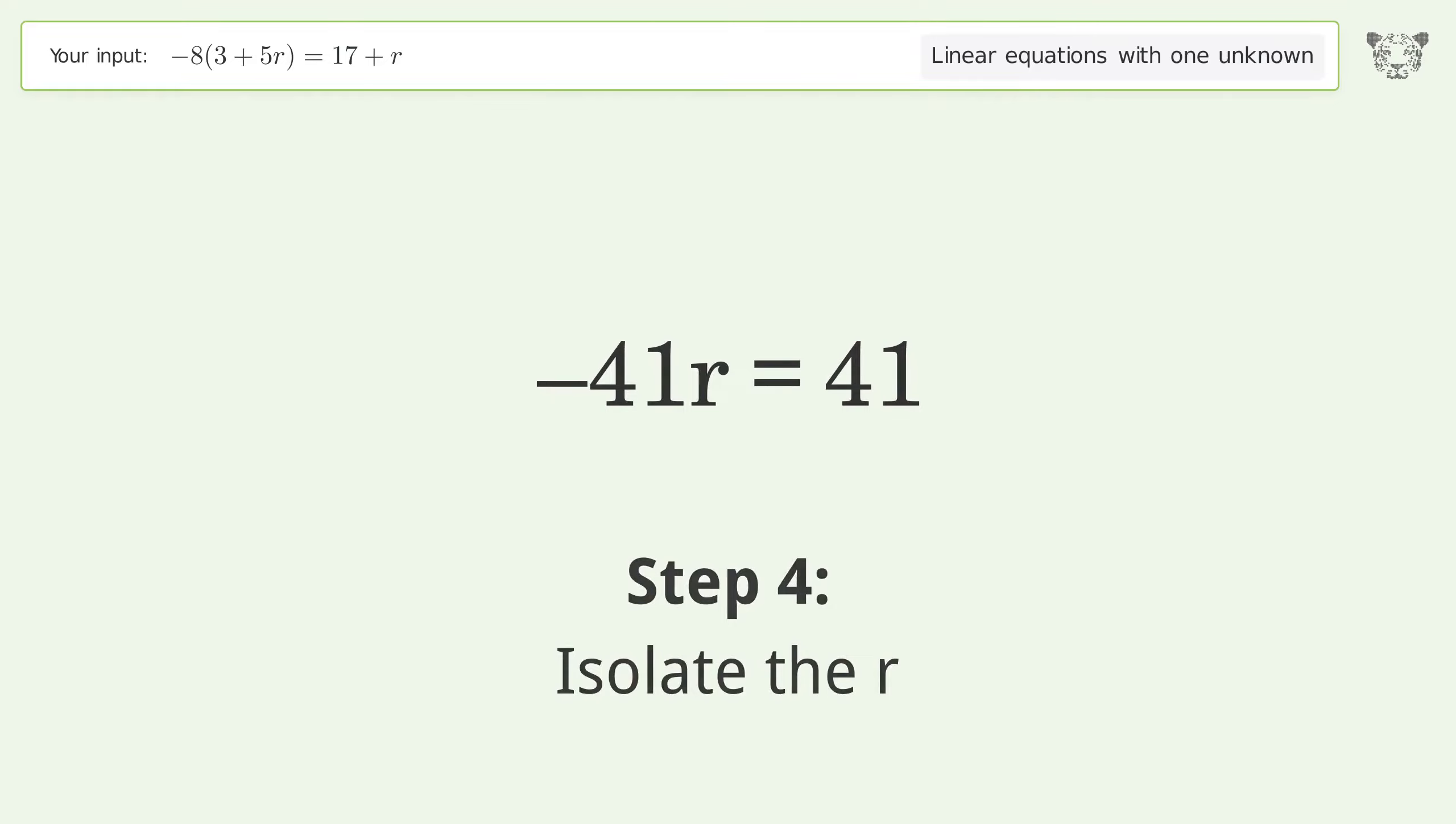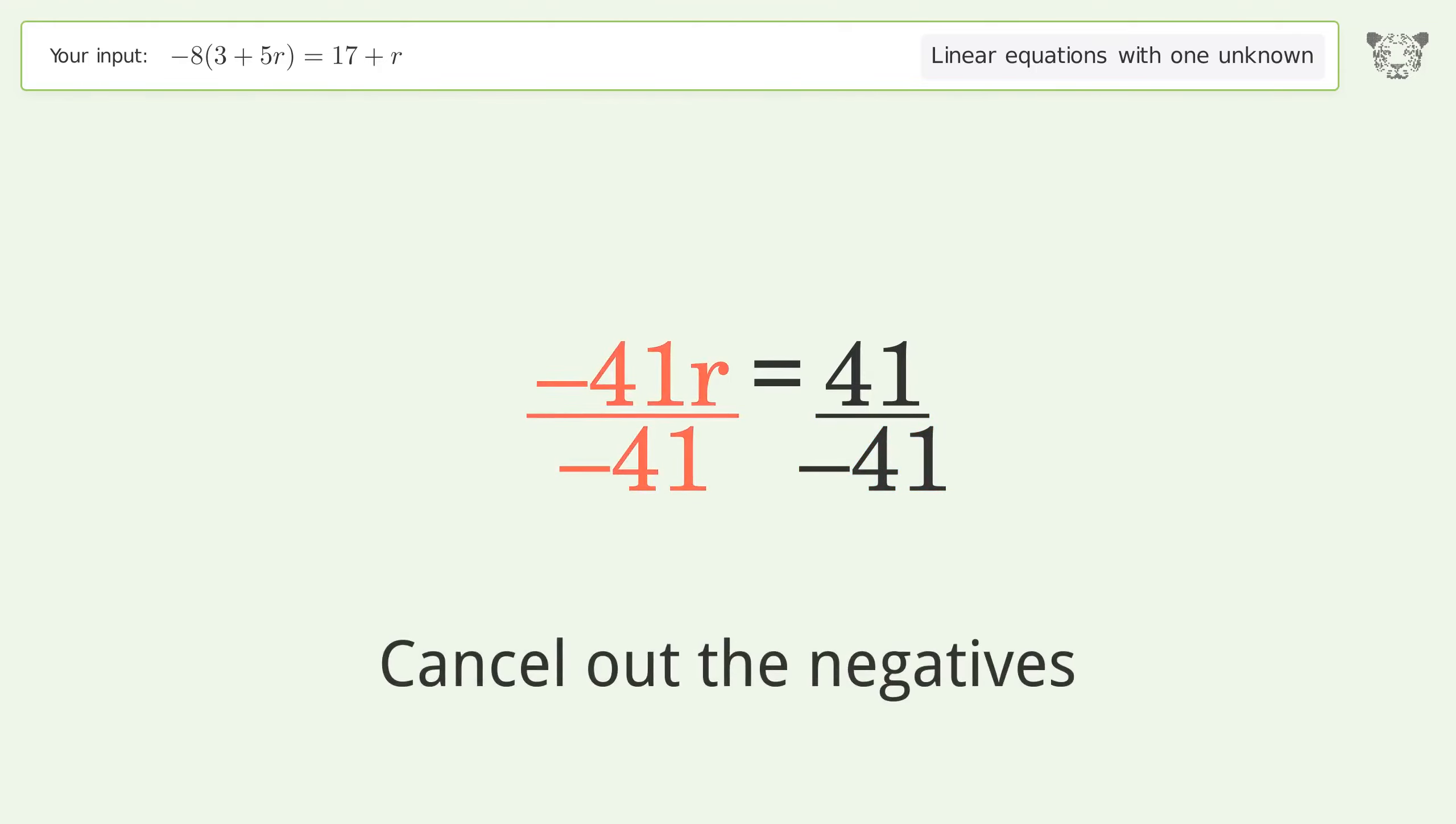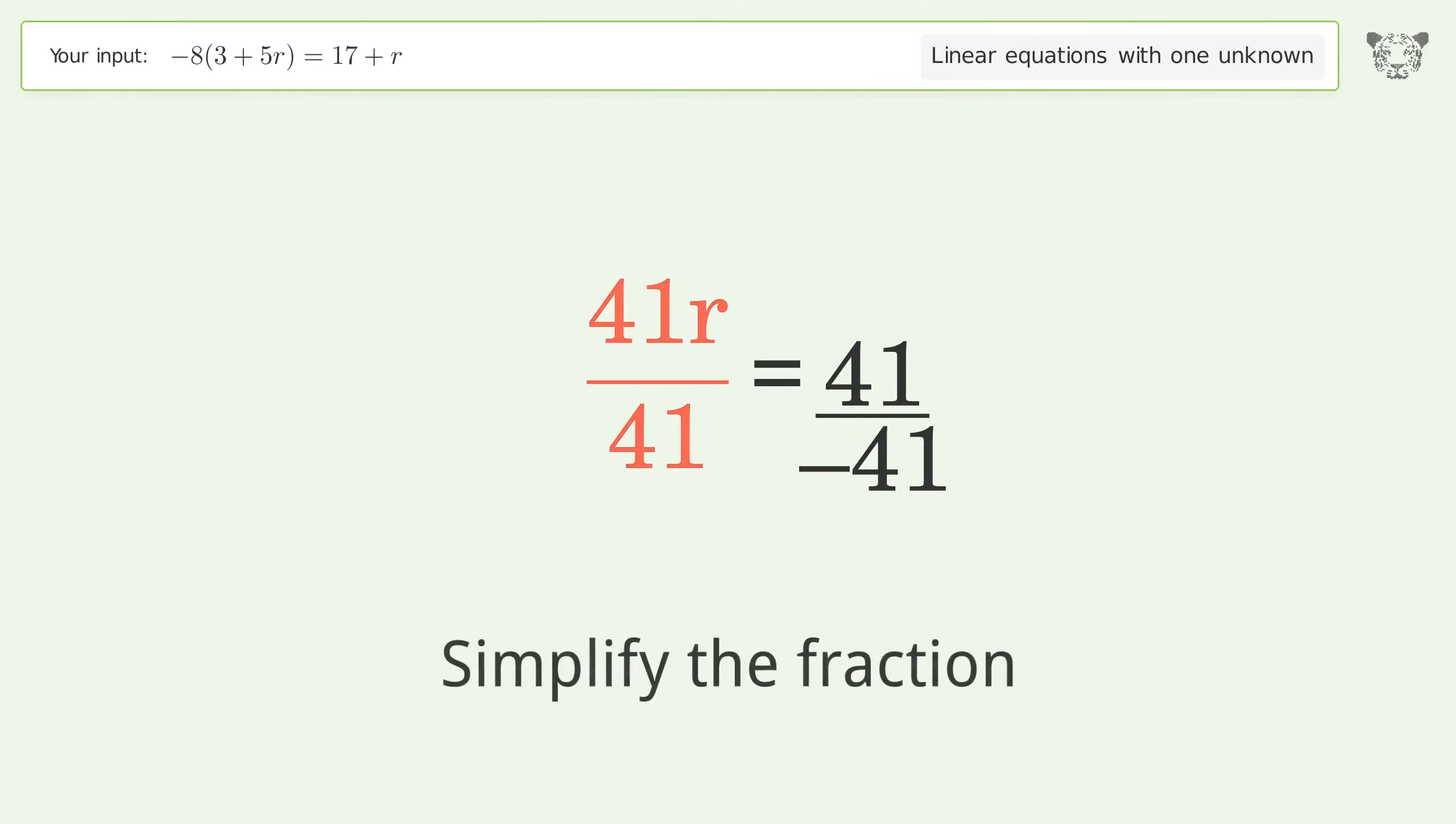Isolate the r. Divide both sides by negative 41. Cancel out the negatives. Simplify the fraction.